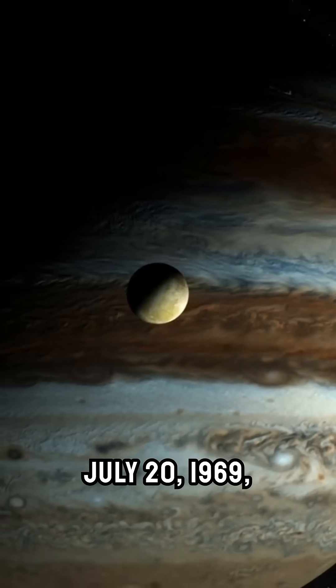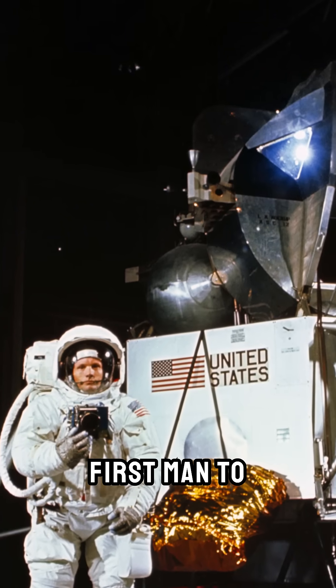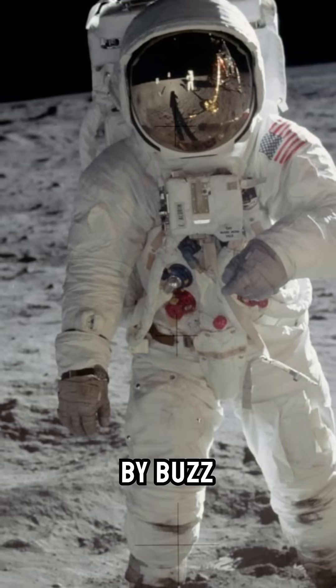On July 20, 1969, Neil Armstrong became the first man to walk on the moon, followed by Buzz Aldrin.